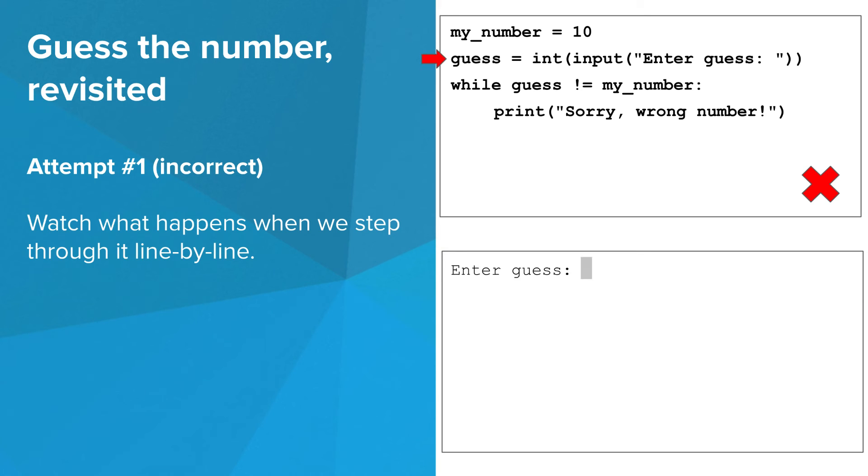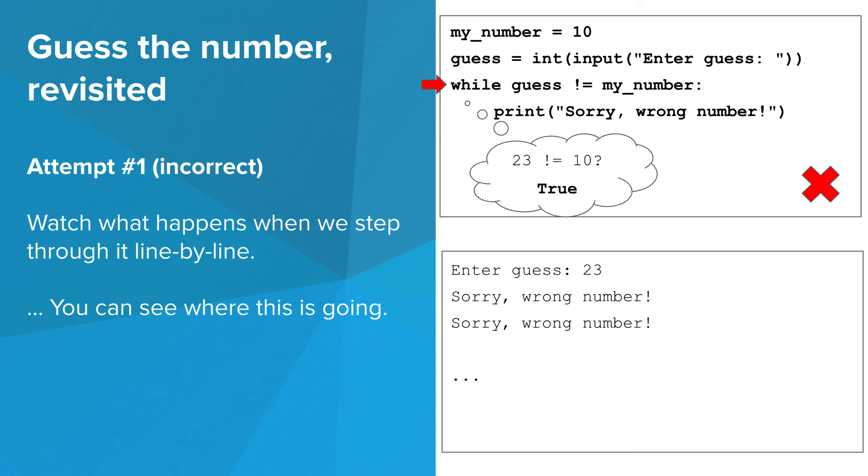My_number gets set to 10, we ask the user for a number, they type 23, and we compare that to 10. They are unequal, which means the condition is true. So the print gets executed. We go back to the top and reevaluate the condition, and nothing has changed, so it's still true. So we print again. You can see where this is going. The user never gets a chance to enter a new number.